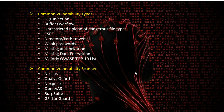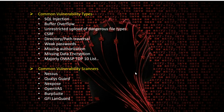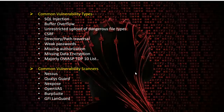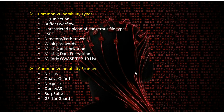Looking at common vulnerability scanners we come across daily: we have Nessus, which we've already covered in the channel — check the video link in the description. We also have Qualys Guard, Nexpose, OpenVAS, Burp Suite, and GFI LanGuard. Trial versions are available for all these scanners, and most functionalities are present in the free versions. Nessus would be a good starting point for anyone looking to work with vulnerability scanners.